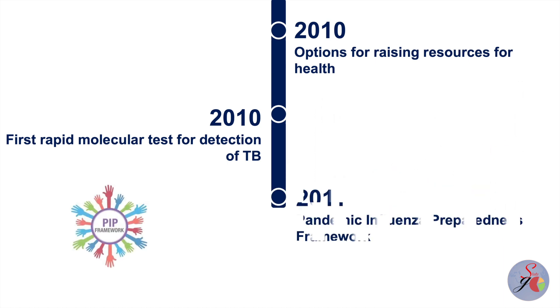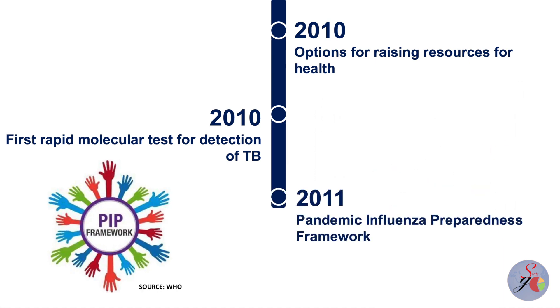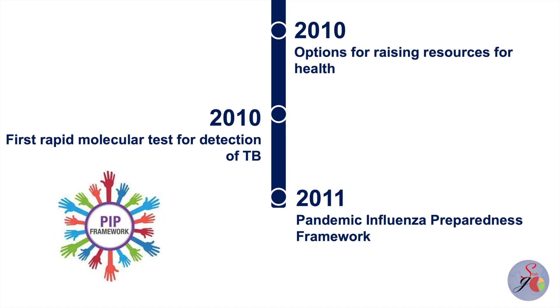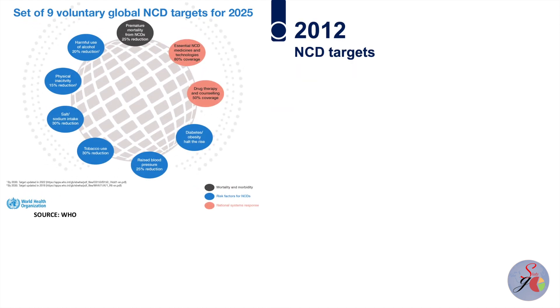The adoption of the pandemic influenza preparedness framework in 2011 paved the way for equitable access to countermeasures during pandemics. For the first time, WHO member states set global targets in 2012 to prevent and control heart diseases, diabetes, cancer, chronic lung diseases, and other diseases.